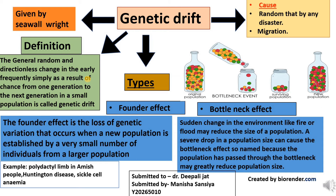Another type of genetic drift is the founder effect. The founding of a new population from a very small number of individuals can cause the new population to differ considerably from the source population. A new colony is established by a very small number of individuals away from a larger population. The founder effect occurs when there is a lack of genetic variation due to a small mating population, causing a loss or decrease of genetic variation in small isolated colonies derived from the original population.